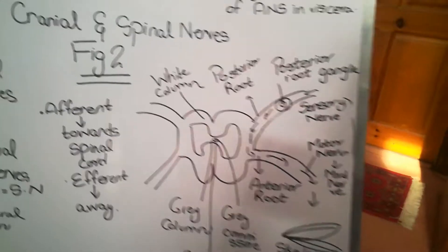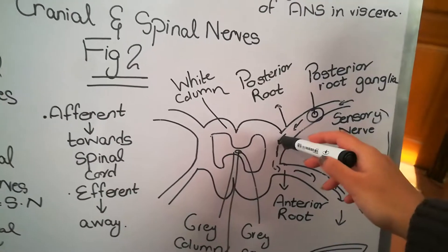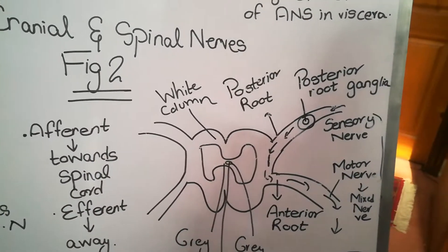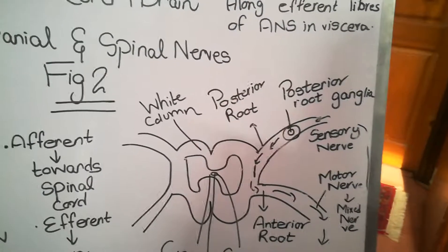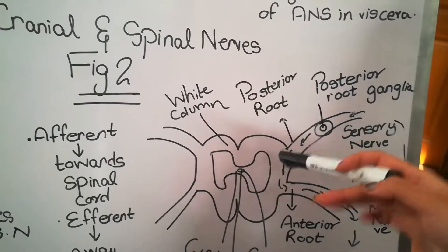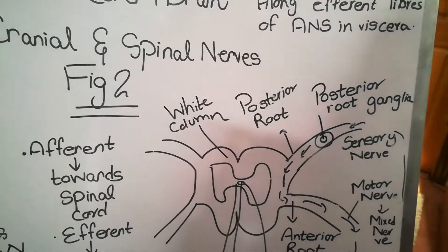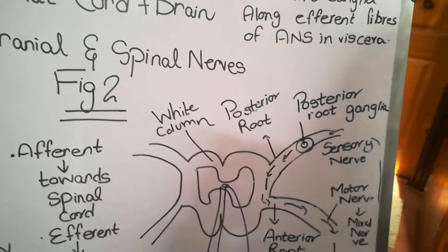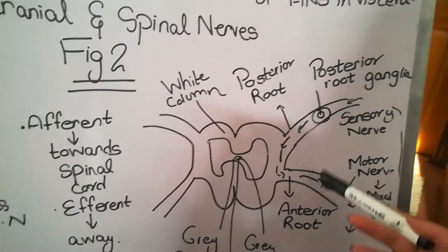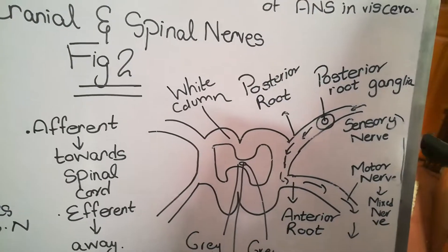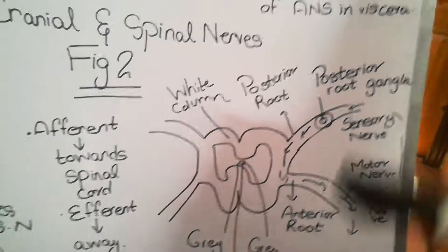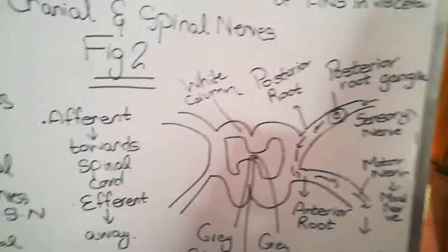These roots are united with one another by means of anterior and posterior rami. The posterior ramus conducts impulses to the skin of your back, and the anterior ramus conducts impulses and covers the skin of the front of the body.